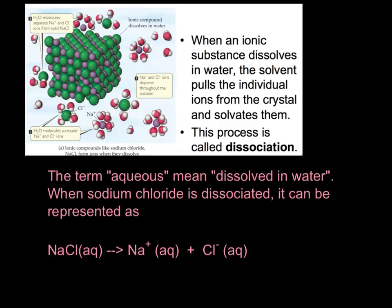When an ionic substance dissolves in water, the solvent pulls the individual ions from the crystal and solvates them. Here we have NaCl as this large green and purple substance. The Na is green and the Cl is purple. Water, represented by these red and white molecules, surrounds the Na and separately surrounds the Cl. We call this process dissociation. We're disassociating the ions from one another. The Na and Cl as a compound are dissociated when we dissolve NaCl in water.